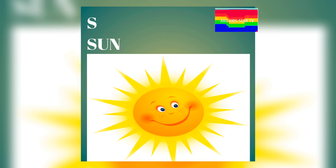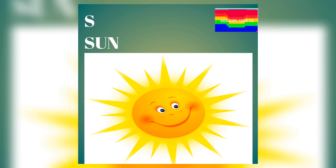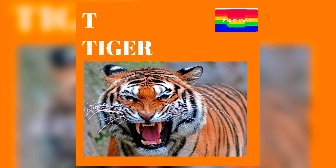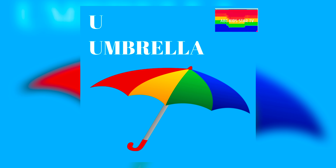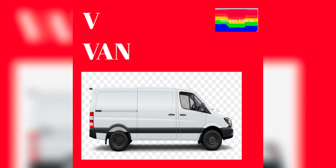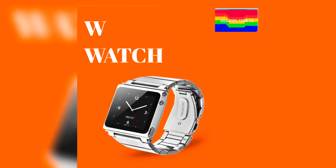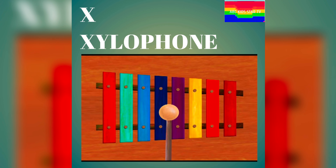S for sun, T for tiger, U for umbrella, V for van, W for watch, X for xylophone.